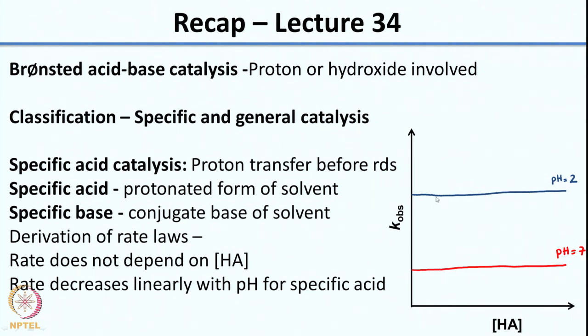Similarly, for specific base catalysis, the kinetics depend only on the concentration of OH⁻, not on any other base added to the reaction mixture. When we derived the rate laws, we saw that the K value depended only on the concentration of H3O+ or OH⁻, not on the concentration of the added acid HA. If you plot K_observed versus concentration of HA, you get a straight line — two straight lines at two different pHs, with a higher K_observed at lower pH for specific acid.